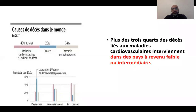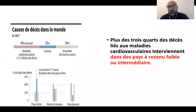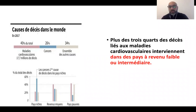La plus grosse partie des décès dans le monde est imputée aux maladies cardiovasculaires. Les pays développés ont réussi à en diminuer l'incidence, elles sont donc en nette régression chez eux. Par contre, la majorité de ces décès se situent dans des pays comme l'Algérie, les pays en voie de développement, où il y a une explosion des facteurs de risque.